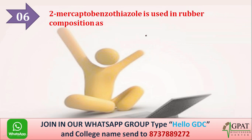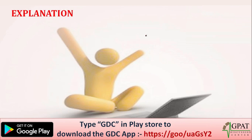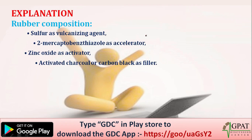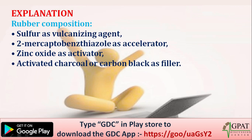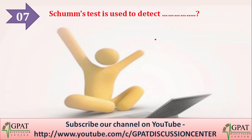Next question: mercaptobenzothiazole is used in rubber composition as what? The correct answer is accelerator. In rubber composition, sulfur acts as a vulcanizing agent, mercaptobenzothiazole acts as an accelerator, zinc oxide acts as an activator, and activated charcoal or carbon black is used as a filler. So option B, accelerator, is the right answer.